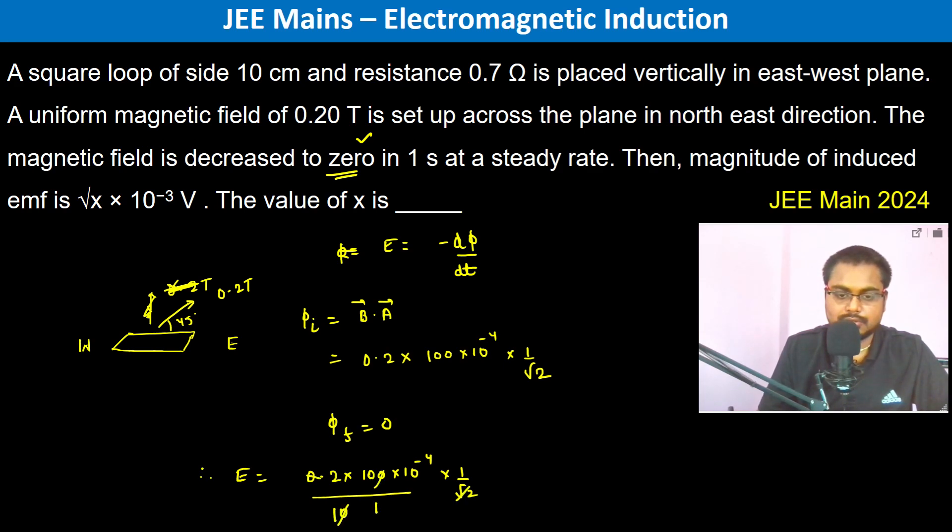This is gone, so this is going to be root 2, so root 2 into 10 to the power minus 3 volts. So basically there is no requirement of resistance here. So the answer is going to be simply root 2. Thank you.